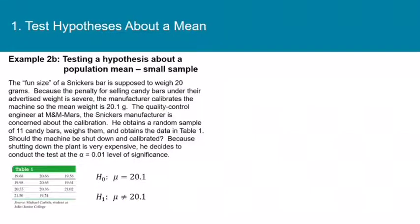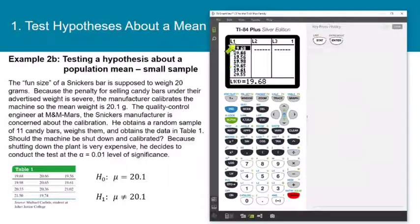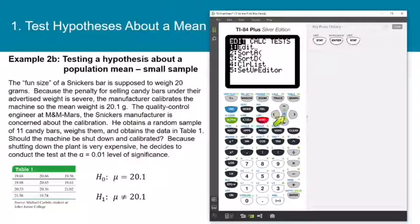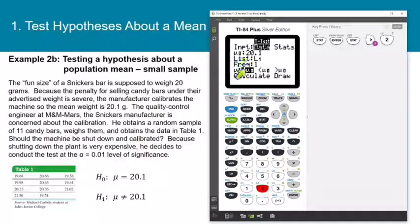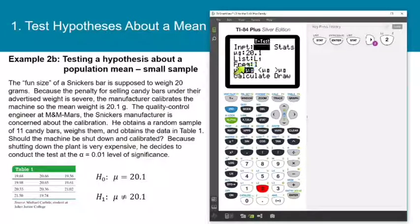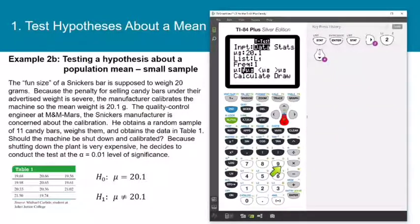Pull up the calculator. Data is already entered in list 1. Press STAT, arrow to the test submenu, choose the t-test (number 2). Leave data selected, arrow down to mu sub zero and enter 20.1. Make sure the list indicates list 1, frequency is 1. This is a two-tailed test, so select the not-equal-to sign. Make sure that's selected and press enter so it stays selected when you arrow down to calculate.